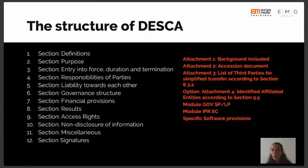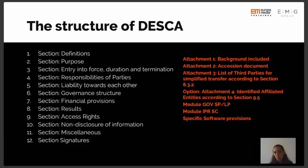Regarding the structure of DESCA: the next slide will compare the structure of the grant agreement and the structure of the consortium agreement. The grant agreement is there to protect the interests of European Union citizens and, in a sense, the interests of the European Commission. The consortium agreement, on the other hand, should protect the project itself — that is its main purpose — considering all the interests of the individual partner organisations and making sure the project can be implemented.